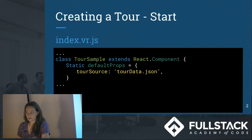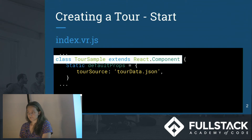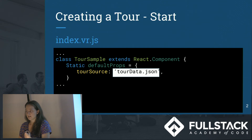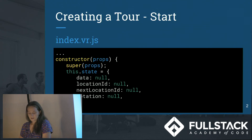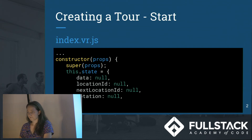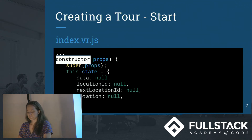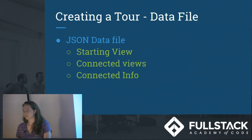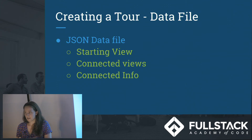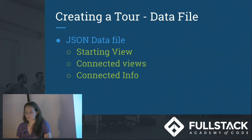In index.vr.js, we have a React component that will be used for the tour. That React component has the tour data in a data file and refers to that. The tour sample class also has a constructor function, initial state, and other things we are familiar with from React, including componentDidMount. The state will be changed in a function through componentDidMount using that data file. We need to create our data file with a starting view, the views connected to it, and connected info for that view.